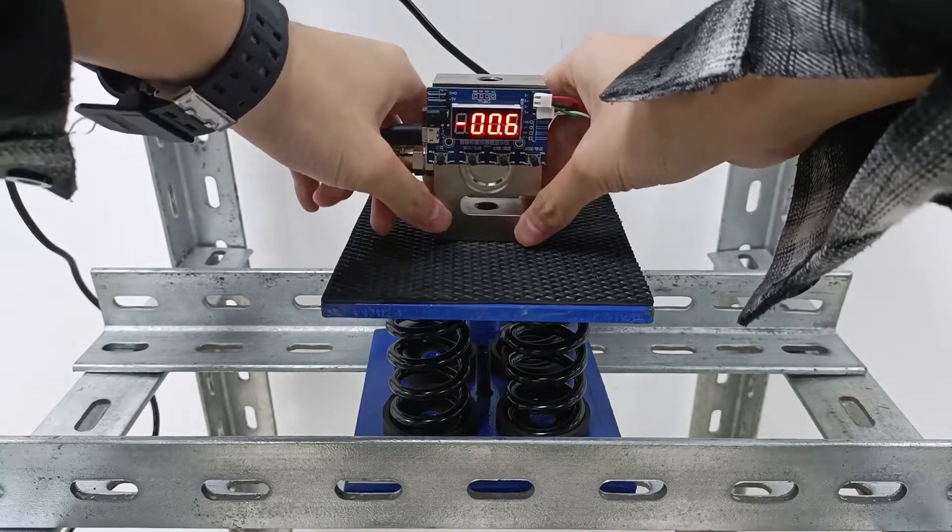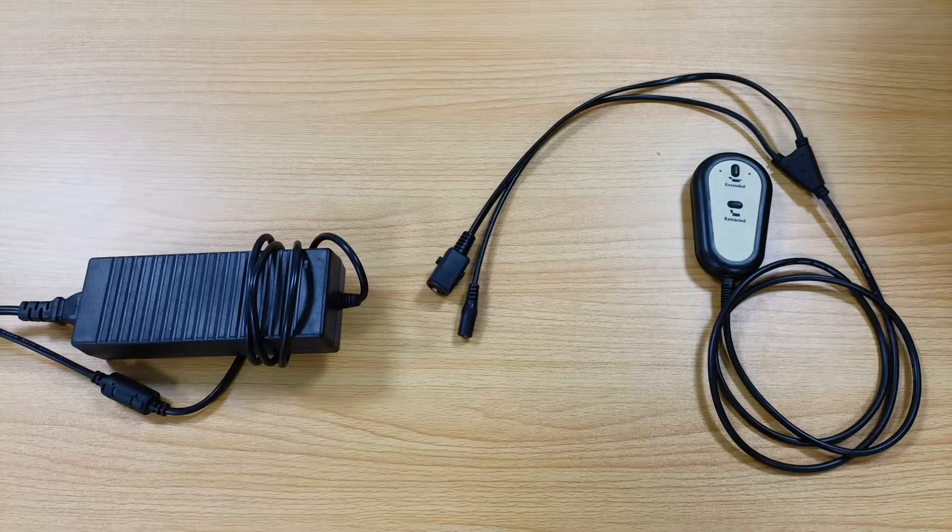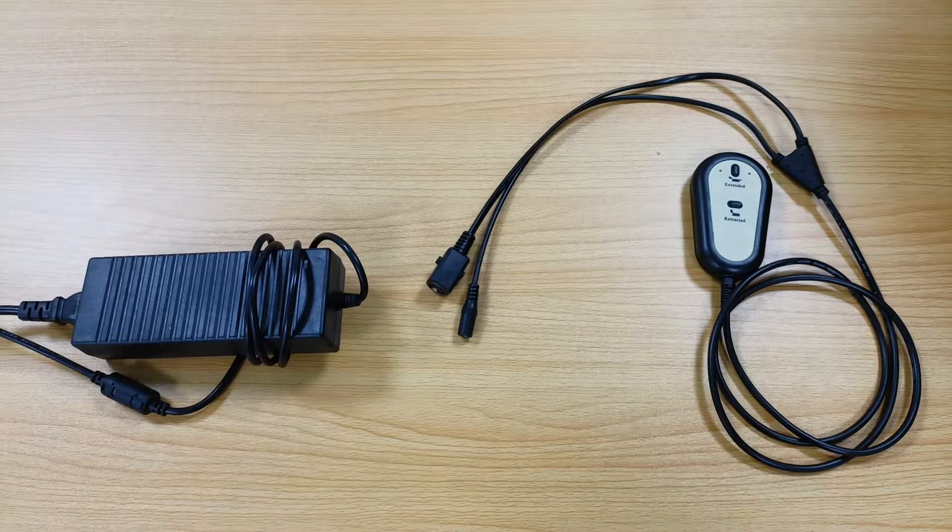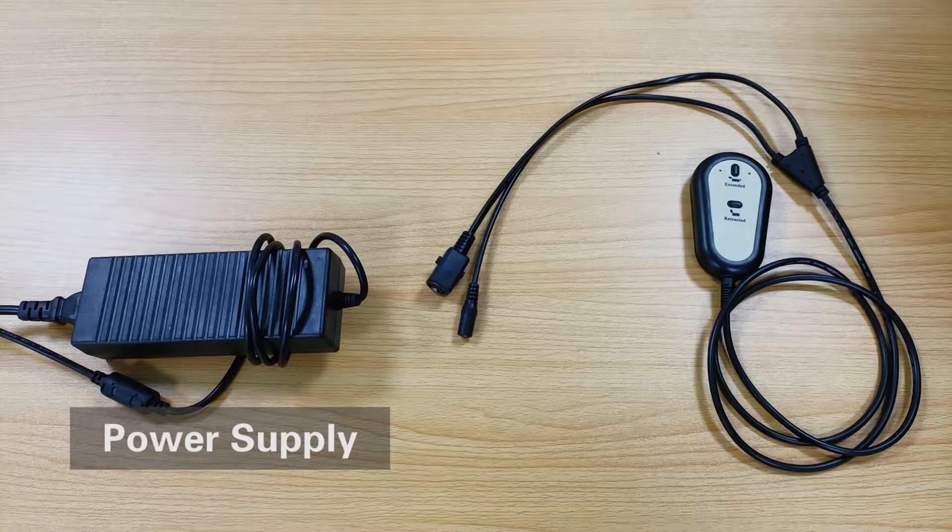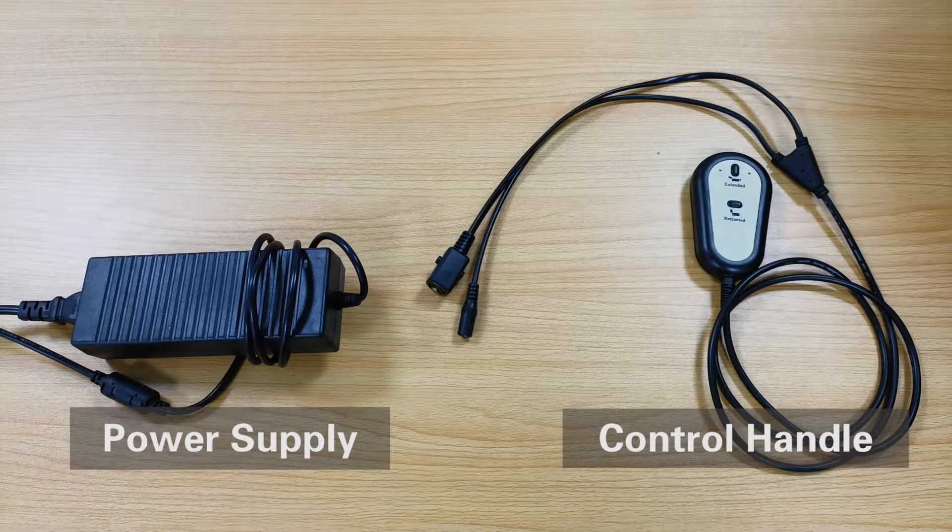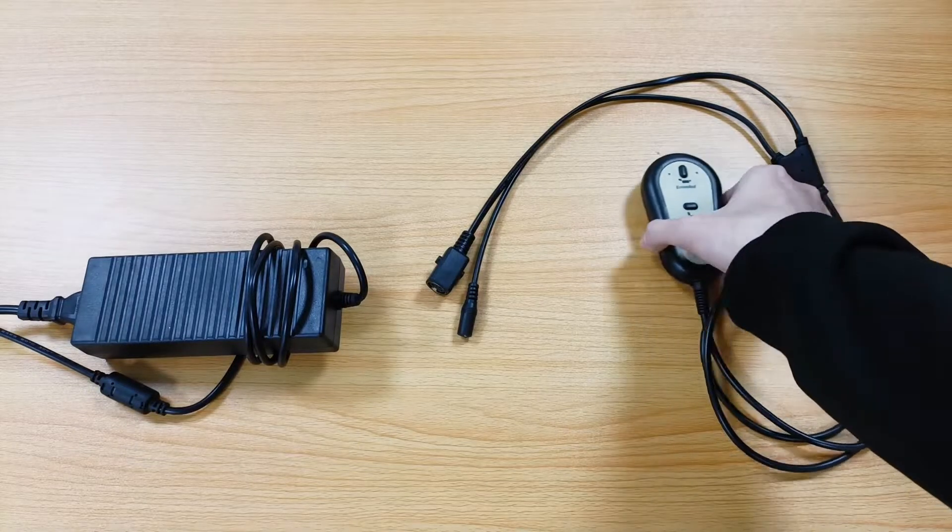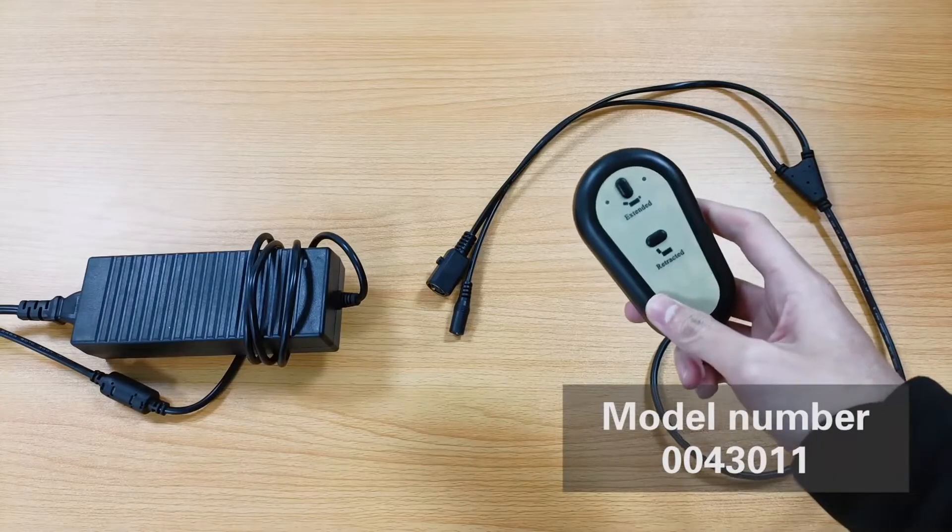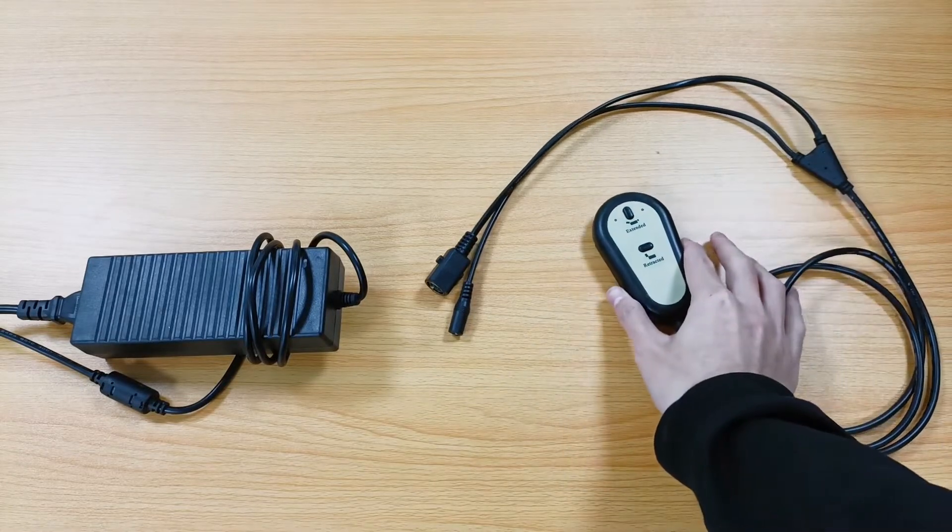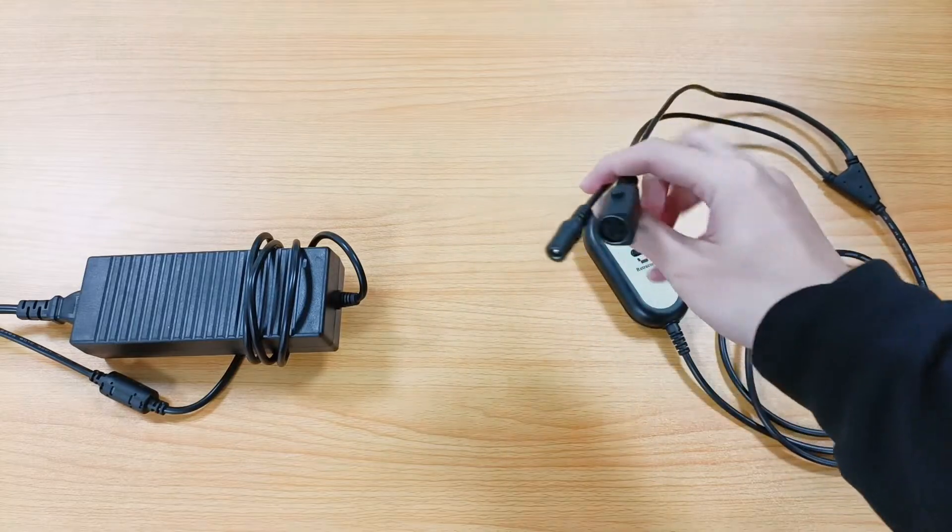Next, we place the sensor in the middle of the shock absorber. In order to operate the linear actuator, we also need to use a power supply and a manual controller or control handle. The model number of this control handle is 0043011.